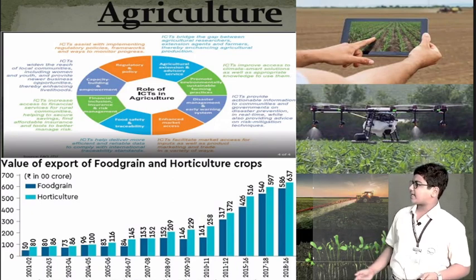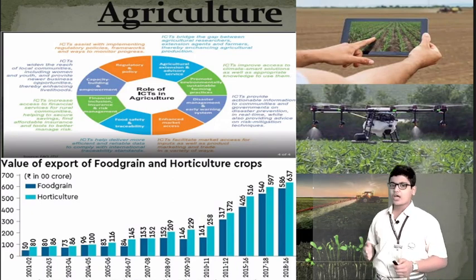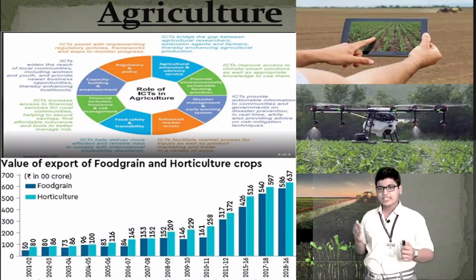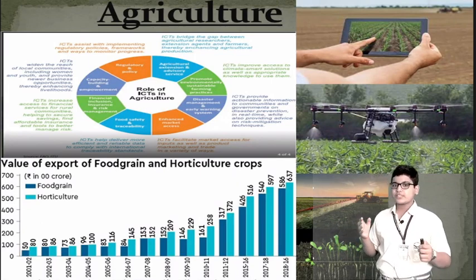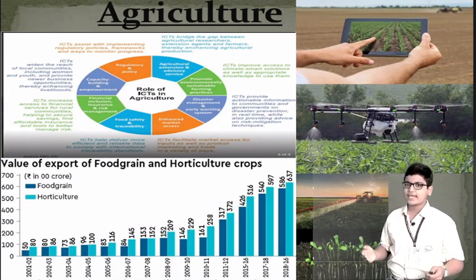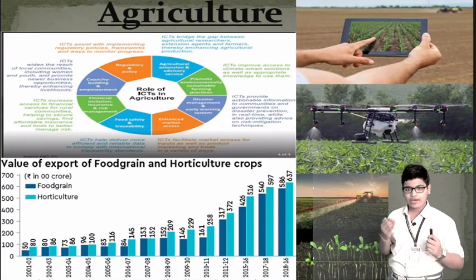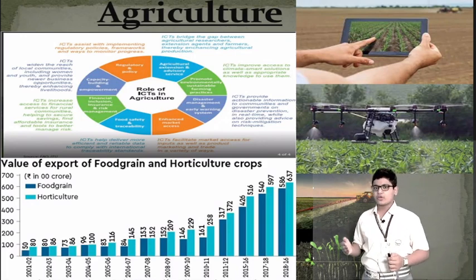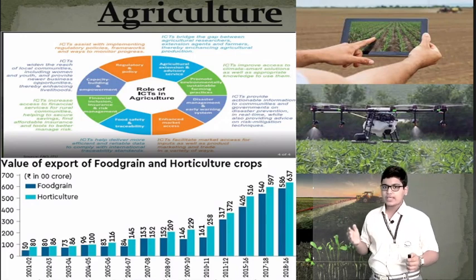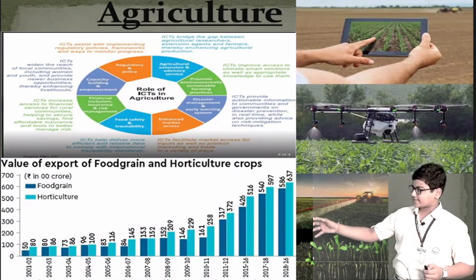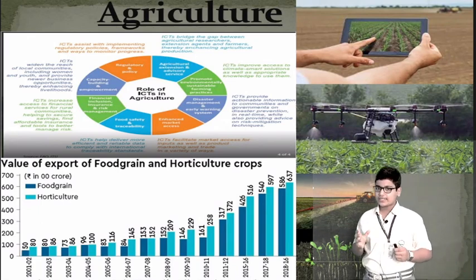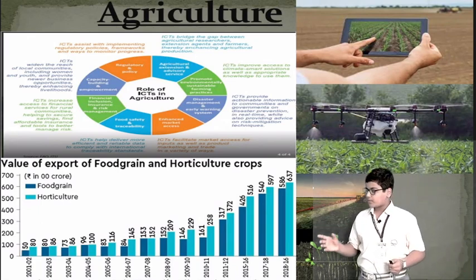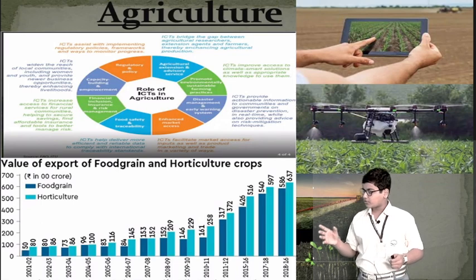It also includes monitoring crop growth via smartphone, using drone cameras for surveillance, using crop sensors, and ultrasound for livestock. Using these modern technologies, agriculture has grown, and this is the database that represents the value of export of food grain and horticulture crops from 2001 to 2018.